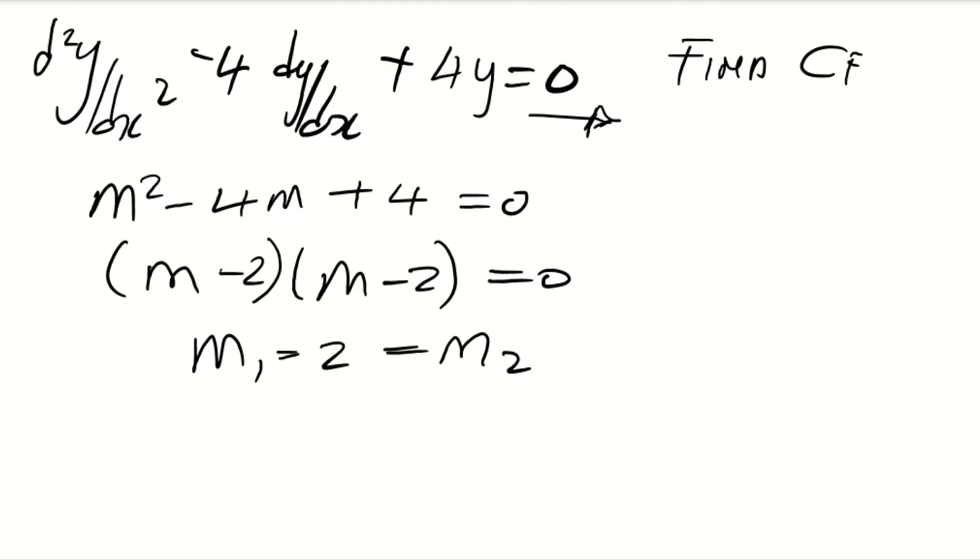So since your m₁ and m₂ are equal, your factors are equal, so you're going to use this equation. Normally, if the factors are not the same, your complementary function's general solution is like this: if your factors are not the same, it's like this: C₁e^(m₁x) plus C₂e^(m₂x). So this is only if your factors are not the same.